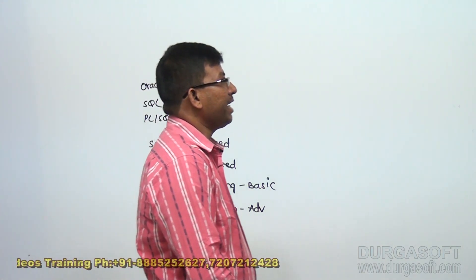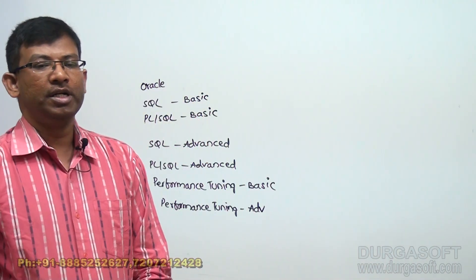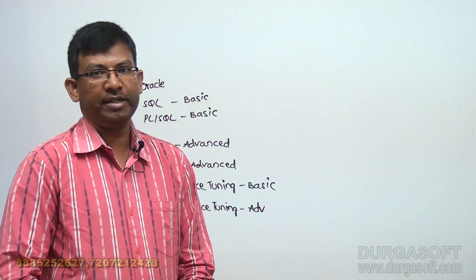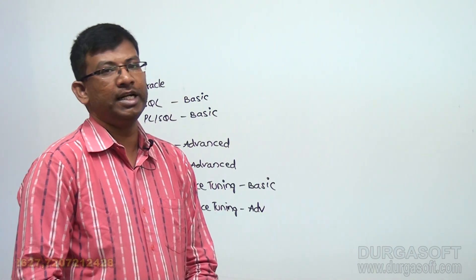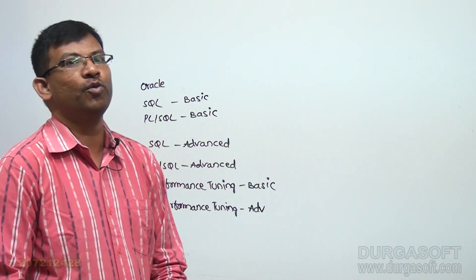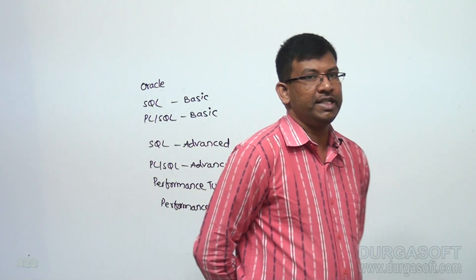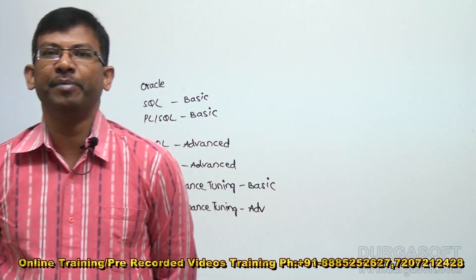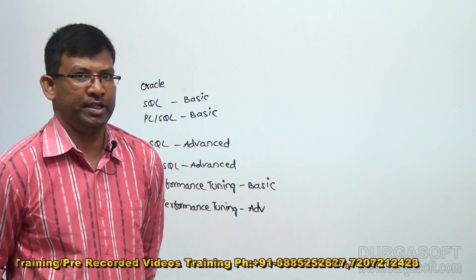Next, 9i and 10g — 'g' stands for grid computing. When it comes to grid computing, multiple database servers can be connected together. At a higher level we can see this as a single database, but actually there are multiple disks involved in it. Next, 12c — 'c' stands for cloud, so whatever database we have can be uploaded into the cloud and we can access the database from the cloud directly.